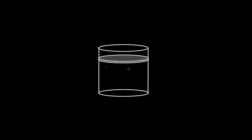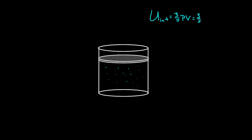Imagine you had a monatomic ideal gas in this cylinder, and there was a tightly fitted piston above it that prevented any gas from getting out. We know that the total internal energy for a monatomic ideal gas is just 3/2 P times V, or 3/2 NkT, or 3/2 nRT.